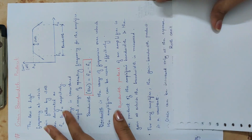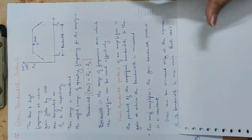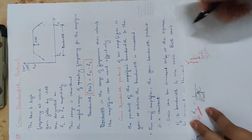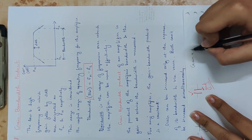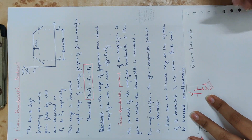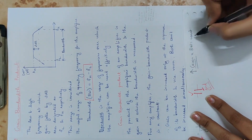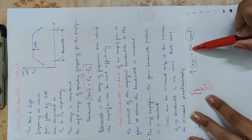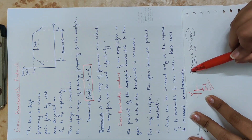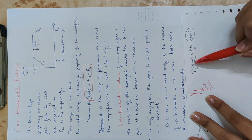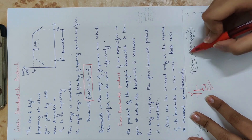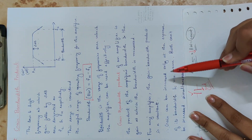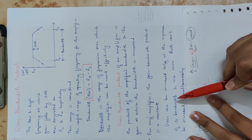Gain multiplied by bandwidth is constant. This product is constant, meaning gain can be increased only at the expense of its bandwidth, and vice versa. Both gain and bandwidth cannot be increased simultaneously.